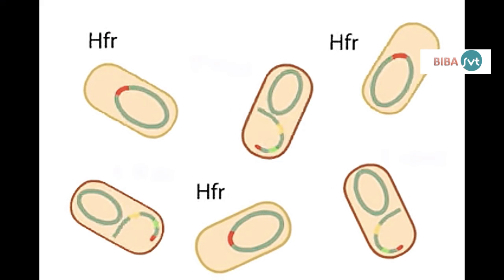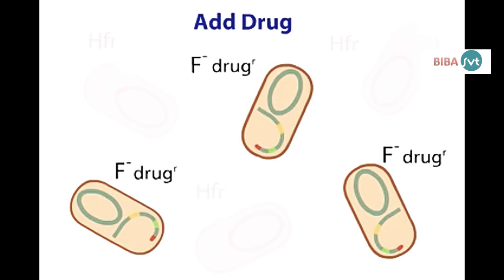At any time, mating might be interrupted. If the F- recipient is drug resistant, drug treatment can eliminate the HFR bacteria. Then one can check for F- recombinants among survivors.